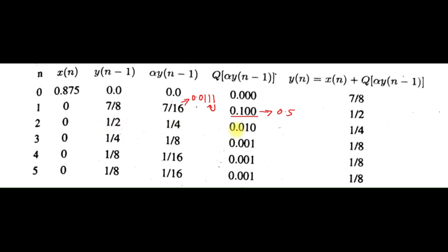For the next step, half of 1/2 is 1/4, binary representation 0.010. Then 1/4 gives 1/8 at n=3, binary 0.001. At n=4, alpha times y(n-1) = 1/16, represented as 0.0001. After rounding, this rounds up to 0.001, which is again 1/8. So the output remains at 1/8 for all subsequent values of n — a zero input oscillation.